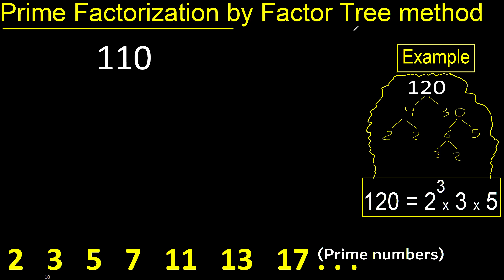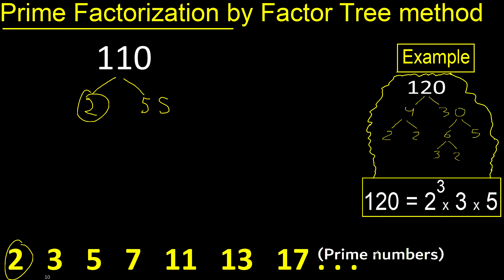Prime factorization. We need 2 numbers that multiply to make 110. 2 multiplied by 55 is 110. Since 2 is a prime number, we finish that branch here.